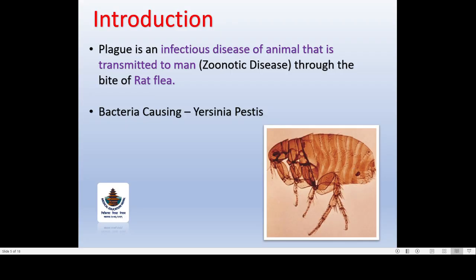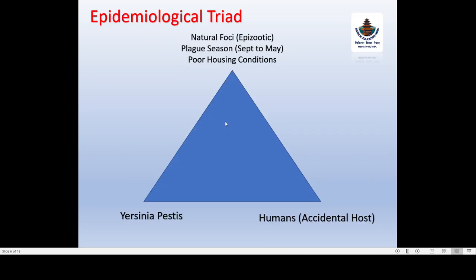Plague is an infectious disease of animals that is transmitted to humans, so it is known as a zoonotic disease. Zoonotic diseases are those diseases that are transmitted to humans through animals. The plague is transmitted through the bite of a rat flea. Here is a photograph of a rat flea. The bacterium that causes this plague is called Yersinia pestis.